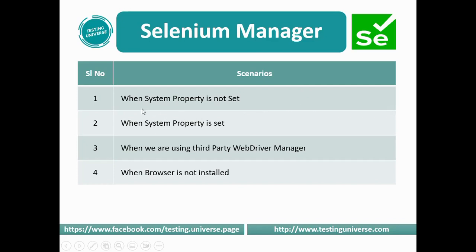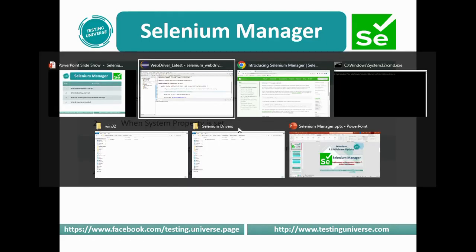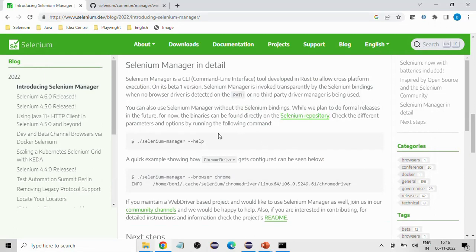These are the scenarios: when system property is not set, we can make use of Selenium Manager. When system property is set, Selenium Manager will be ignored. When using the third-party WebDriverManager, Selenium Manager will be ignored as well. And when the browser is not installed — as I showed with Firefox not installed in my system — we will still get illegal state exception. That is the first part of Selenium Manager.